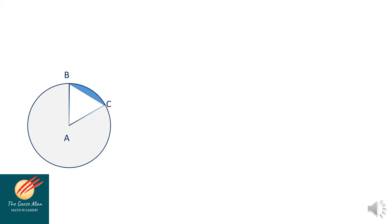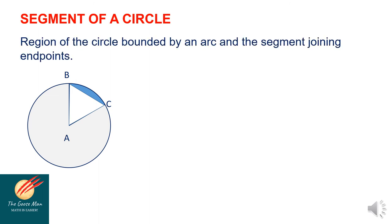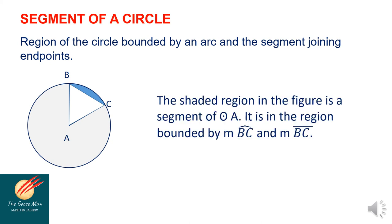We talked about the sector of the circle. Now let's talk about the segment of the circle. The segment of a circle is the region bounded by an arc and the chord joining the endpoints of the arc. Let us consider circle A. The shaded region in the figure is the segment of circle A. It is the region bounded by arc BC and chord BC.